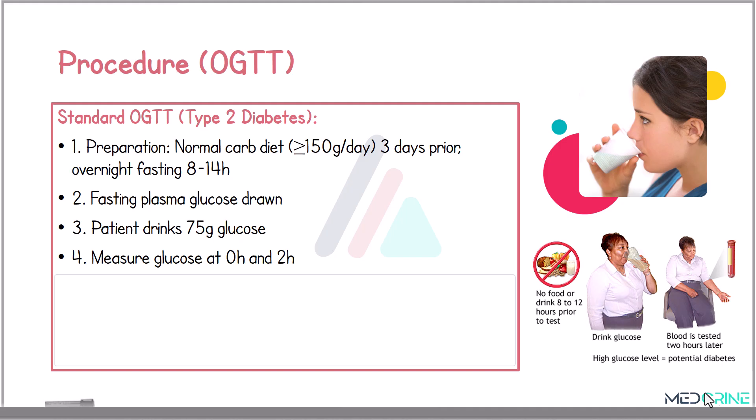A carbohydrate diet should be followed for at least 3 days before the test, where the patient takes at least 150 grams of carbohydrates per day. A fasting plasma glucose is drawn at time point 0, and then a glucose solution with 75 grams of glucose is prepared and consumed within 5 minutes.